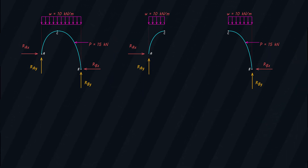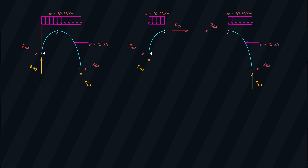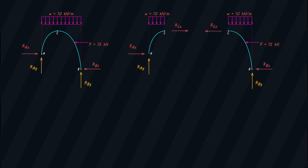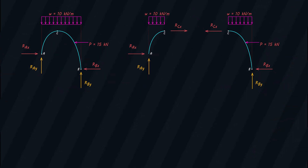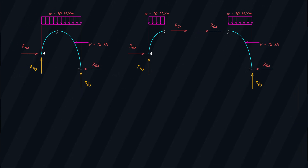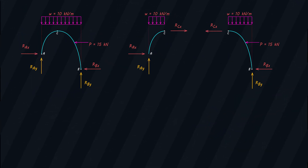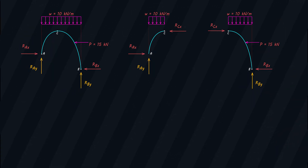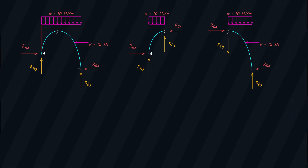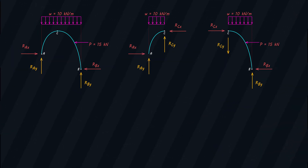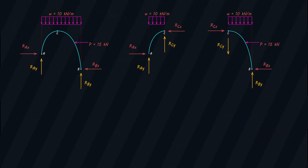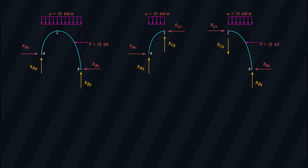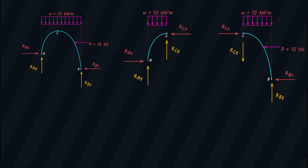At point C, along the x-axis, we have RCX. Notice that these two forces have opposite directions, because we follow Newton's third law of motion — for every action there is always an equal and opposite reaction. Remember that the direction of these forces are just assumed, so we can flip the direction and it does not matter. What's important is that these two equal forces have opposite directions. We also have reactions along Y: RCY, which similarly follows Newton's third law. These are the free body diagrams we need to fully analyze this structure.